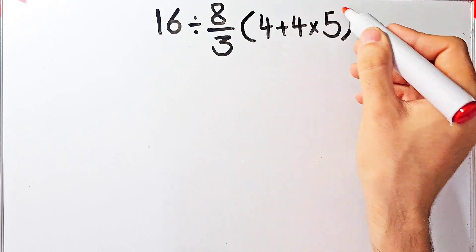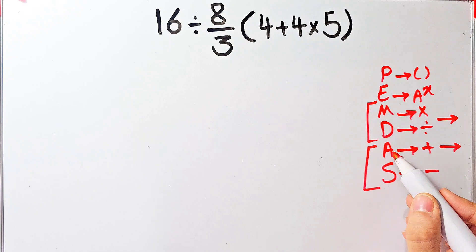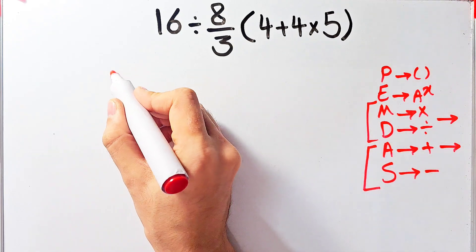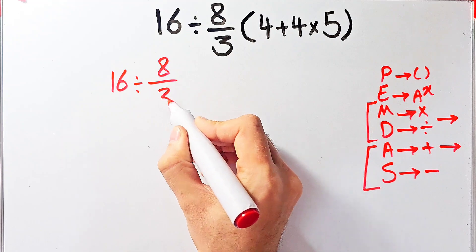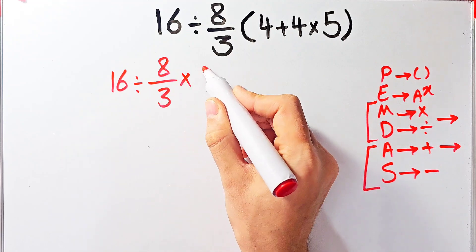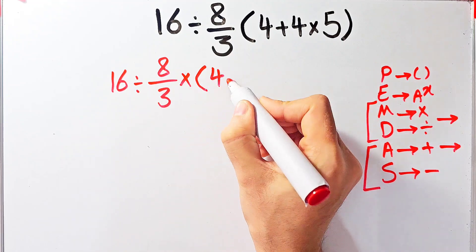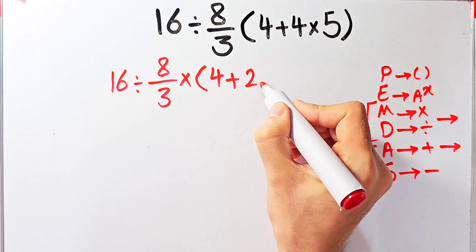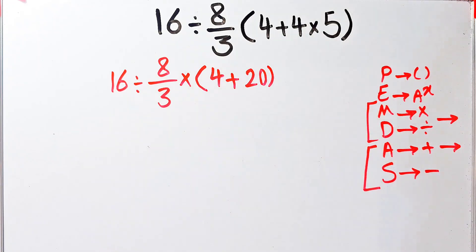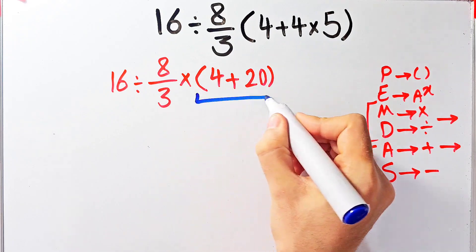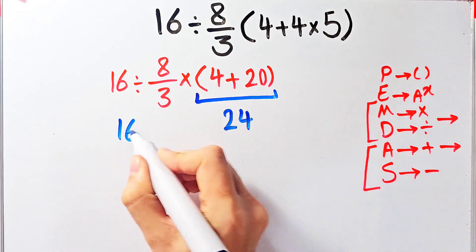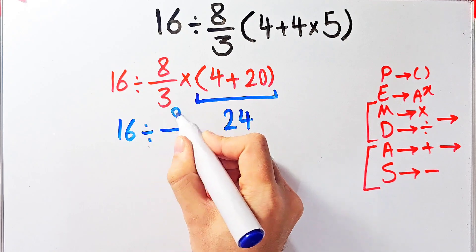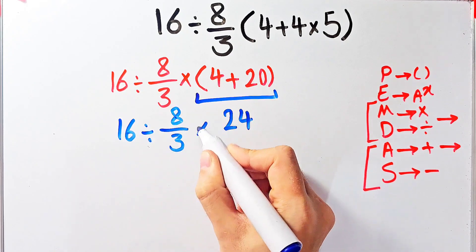Inside the parentheses we have addition and multiplication. First we simplify the multiplication because multiplication has higher priority than addition. The question is 16 divided by 8 over 3, then times open parentheses 4 plus 4 times 5, which equals 20. According to the PEMDAS rule, first we simplify the parentheses: 4 plus 20 equals 24. Now the question is 16 divided by 8 over 3, then times 24.